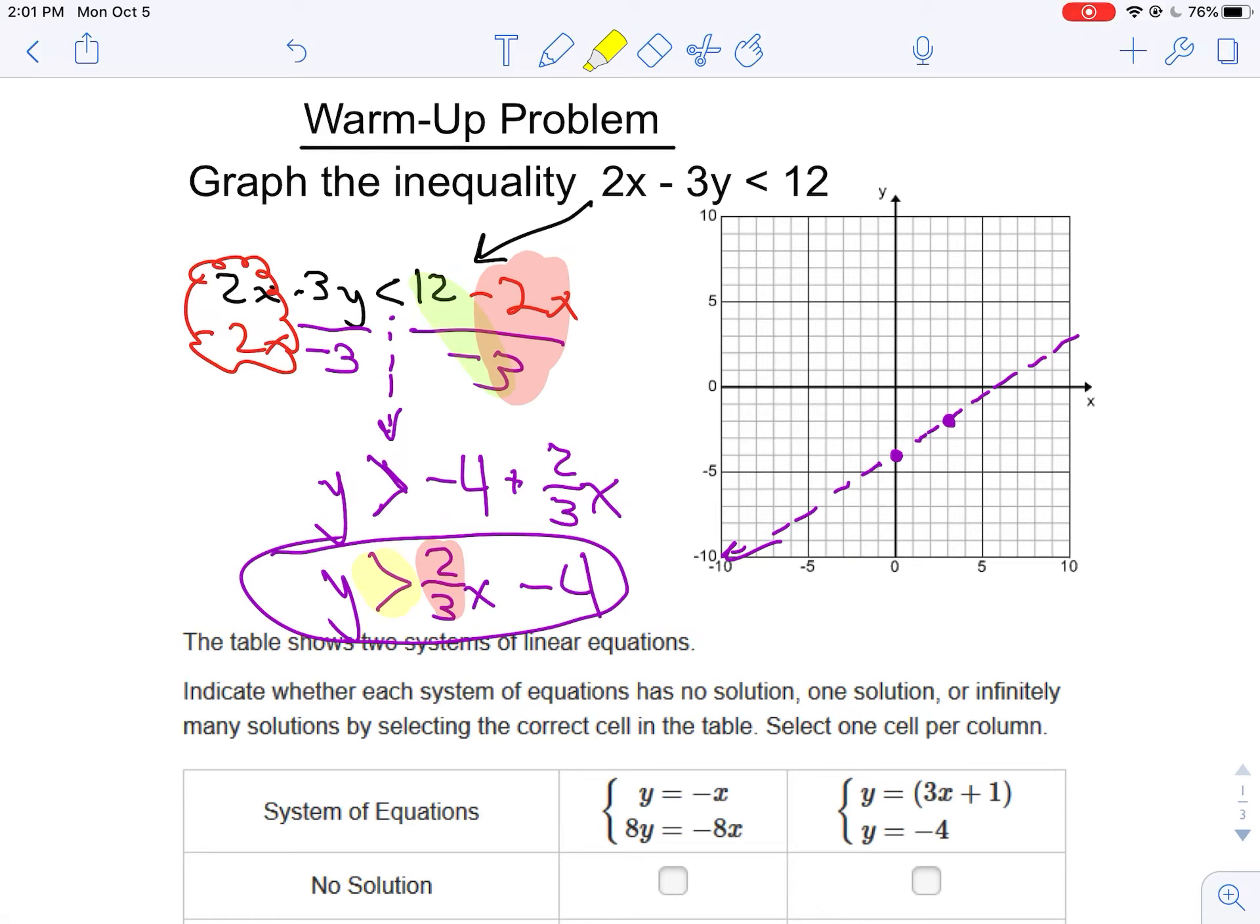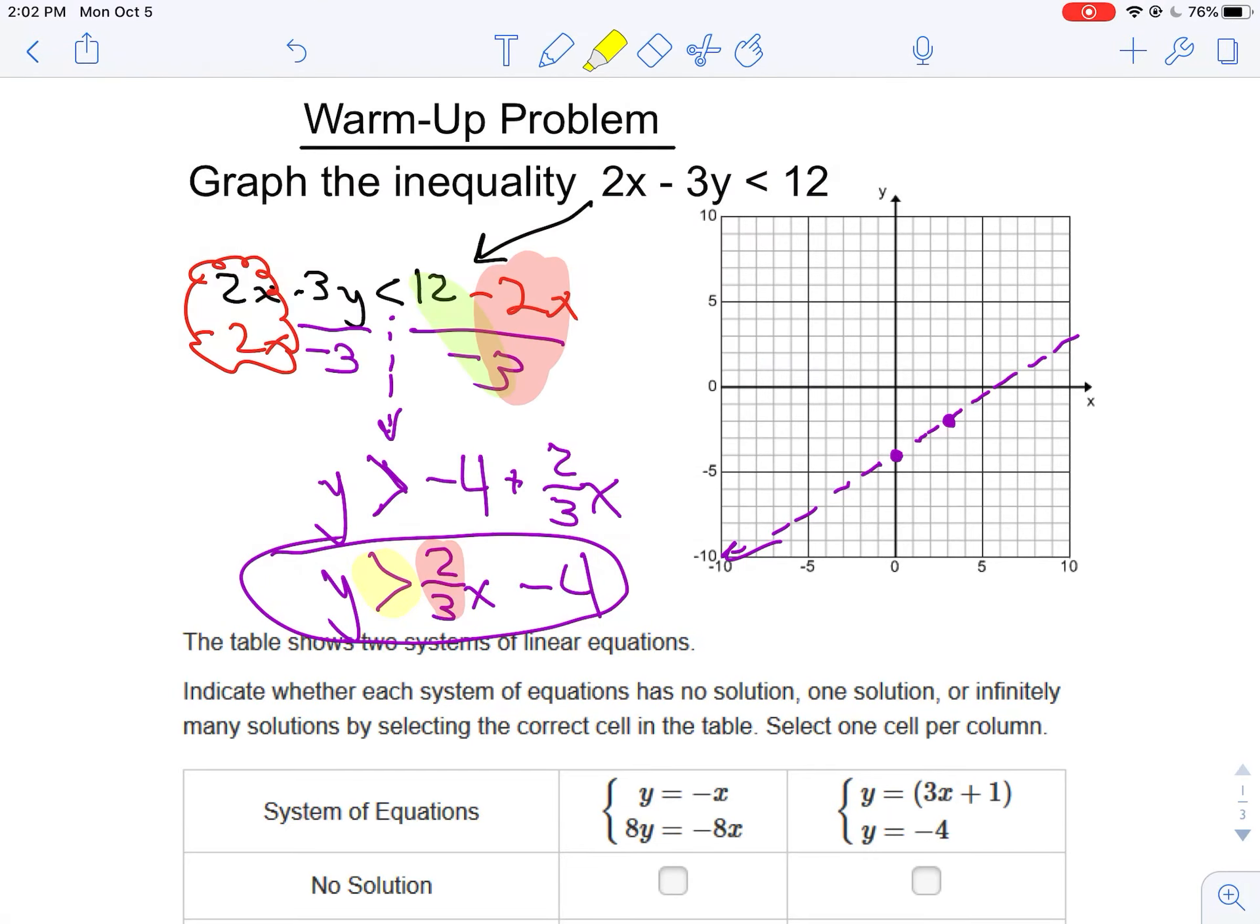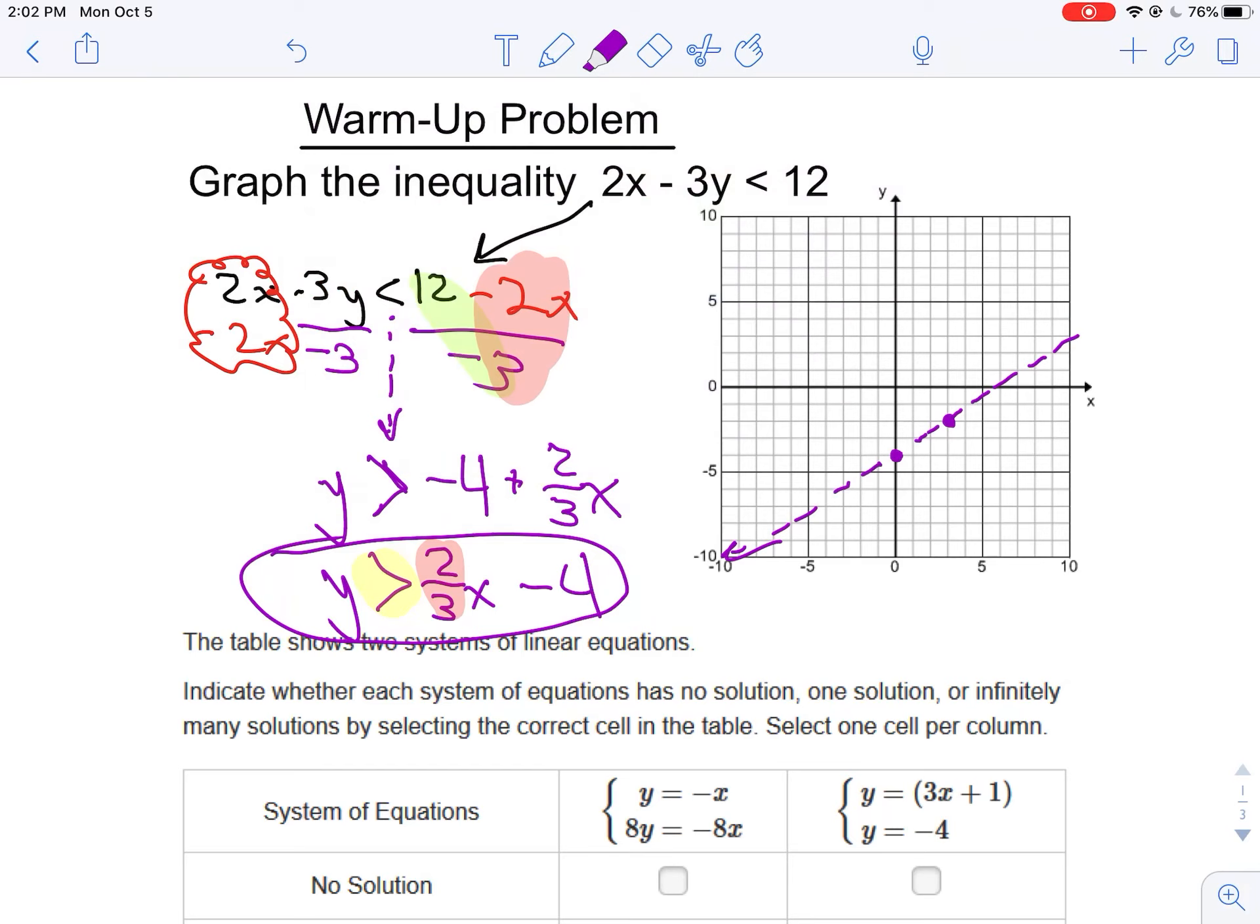Now, the good news is that the side to shade on when you're doing this, it's rather intuitive. When you've got it in function form like this, that y is greater than, or y is less than, when it's greater than, you're simply going to shade above the line. And if it's less than, you'll shade below the line. But all my shading here is going to indicate that all of this area is going to be my solution set.